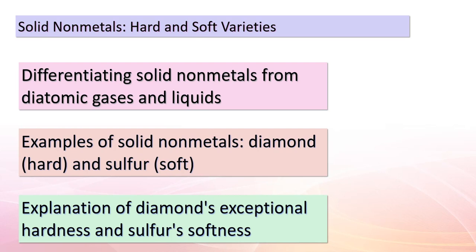Let's explore the solid non-metals in greater detail. In this realm, we encounter two fascinating extremes. On one hand, we have diamond — an extraordinary non-metal known for its exceptional hardness due to its unique atomic structure. On the other hand, we find sulfur — a non-metal that's remarkably soft, stemming from the arrangement of its atoms. We have these intriguing contrasts within the world of non-metals.